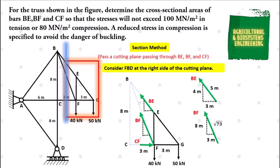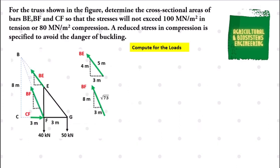After determining the values for the slopes of bars BE and BF, our next step is to solve for the load at bars CF, BF, and BE. We need to solve this because we will need it in finding the cross-sectional area later on. We begin solving the load at CF using the moment of force, taking the moment at B.